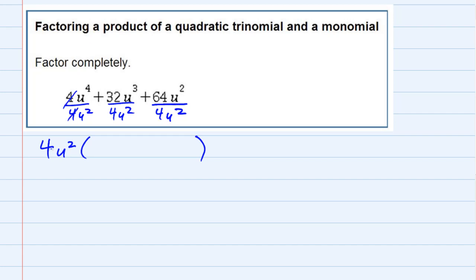In the first term, the 4's cancel, giving me just a 1, and the u squared cancels 2 of those u's in the top, leaving me with just 1u squared.